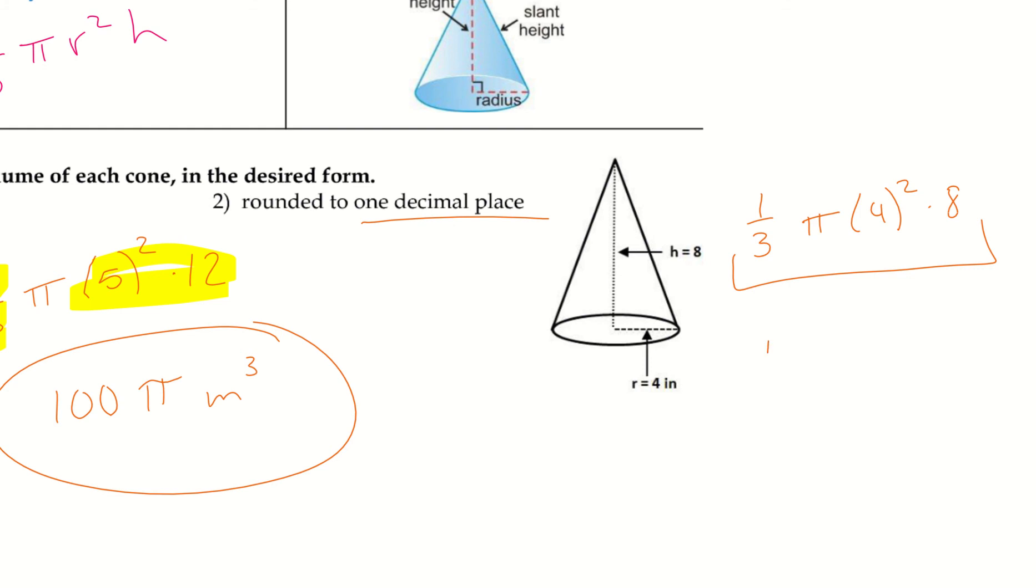And since we want the pi involved, we are going to include this whole statement. And we're going to get 134.0 inches cubed. So, in our calculator, we should have gotten 134.04. Since we were rounding to one decimal place, we can't bring that 0 to a 1, just because it's a 4, not a 5 after it.